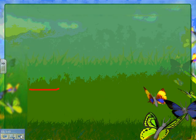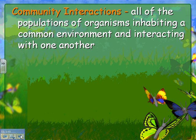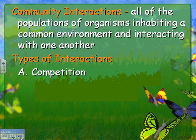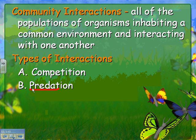Community interactions involve all populations of organisms inhabiting a common environment and interacting with one another. There are three types of interactions. The first is competition, when two different species live in a similar area and use the same resource like food or water — for example, rabbits and deer both eating grass. The next is predation, where a predator hunts down and eats prey; they don't live on each other but one hunts the other.